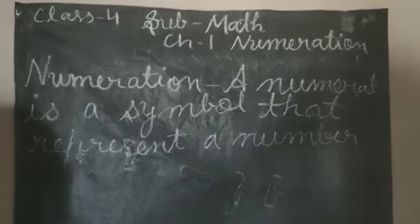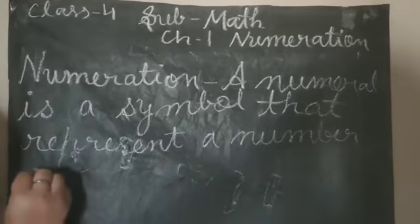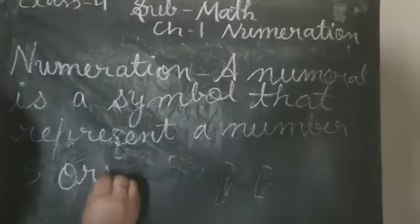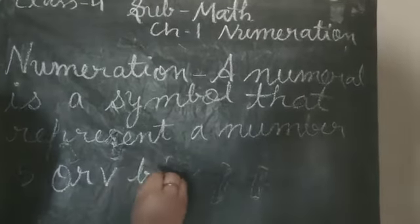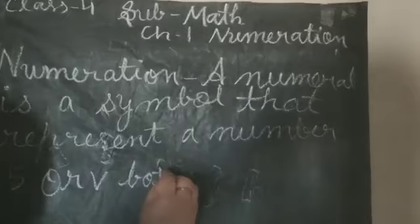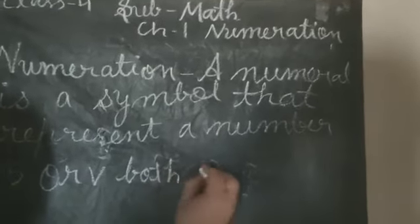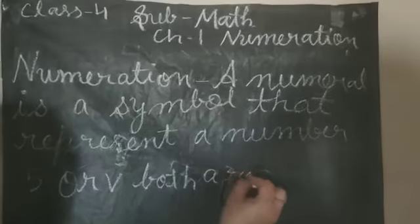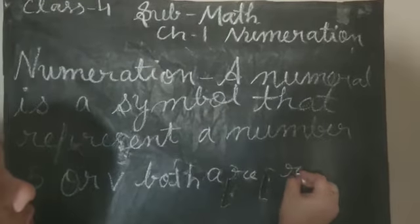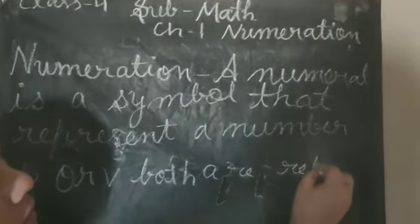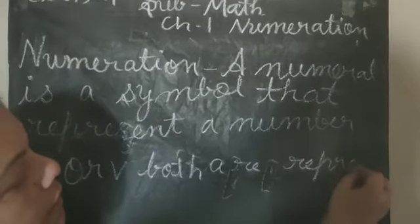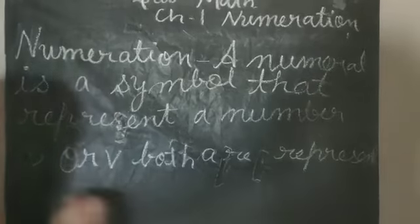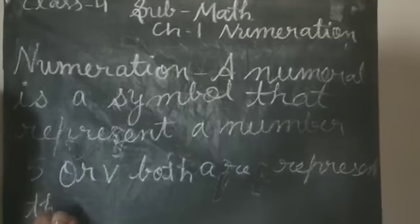What are numerals? As an example, 5 or V — both represent the number 5.